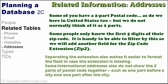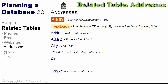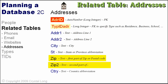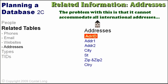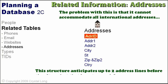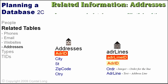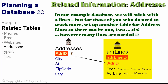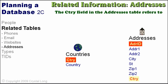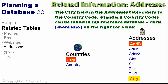Some international addresses do not show the two parts of the postal code together — maybe one part is before a city and one part after. Here is the revised structure showing ZIP as two fields. I've also added an area field to group addresses by a particular area or region. This structure anticipates up to two address lines before the city, but that is not enough for everyone. In our example database, we will stick with two lines for now. For those who need to track more, set up another table for address lines so there can be one, two, three, or however many you want. Standard country codes can be found in my reference database — click More Info on the right for a link.